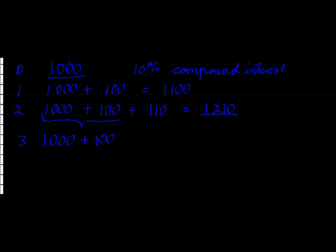Now 110 in the second year, now at the end of the third year, I'm going to get 10% of 1,210. So 1,000 plus 100, plus 110, plus 121, which gives me 1,331 Rand.